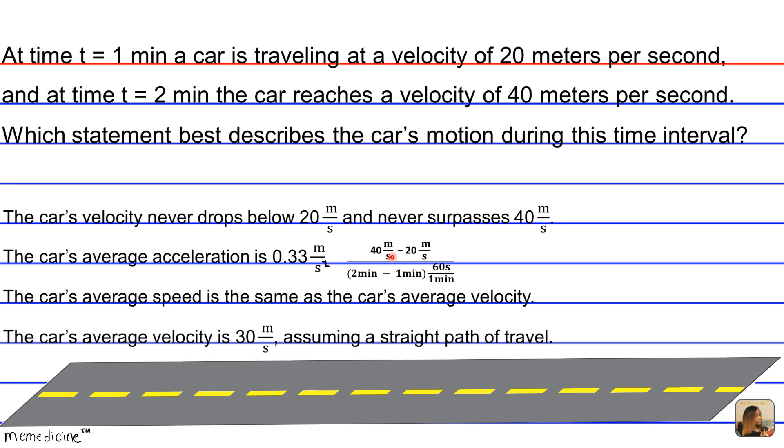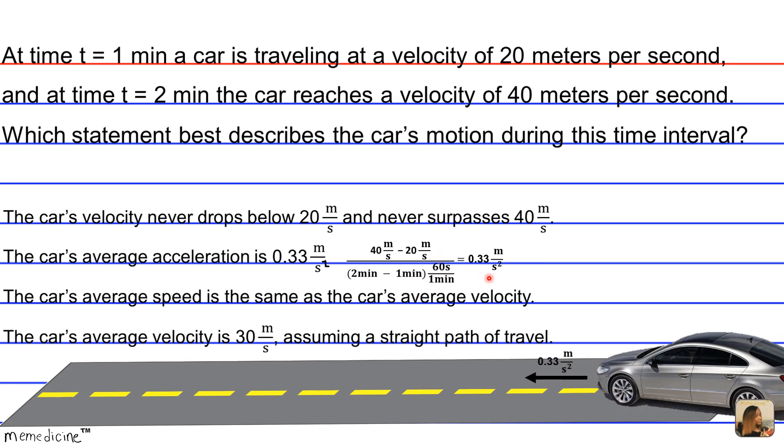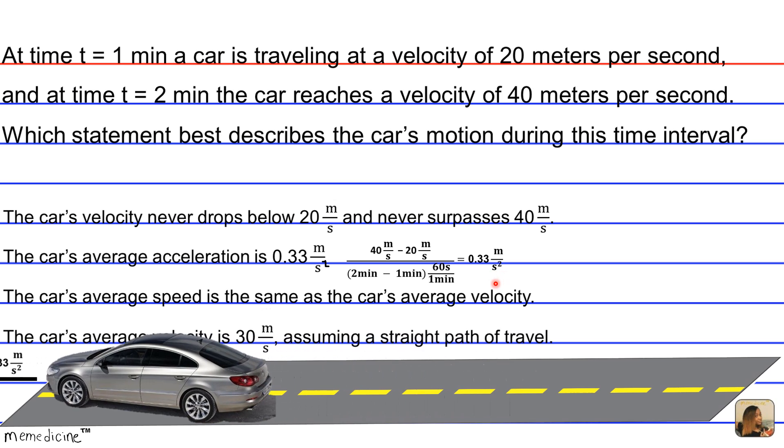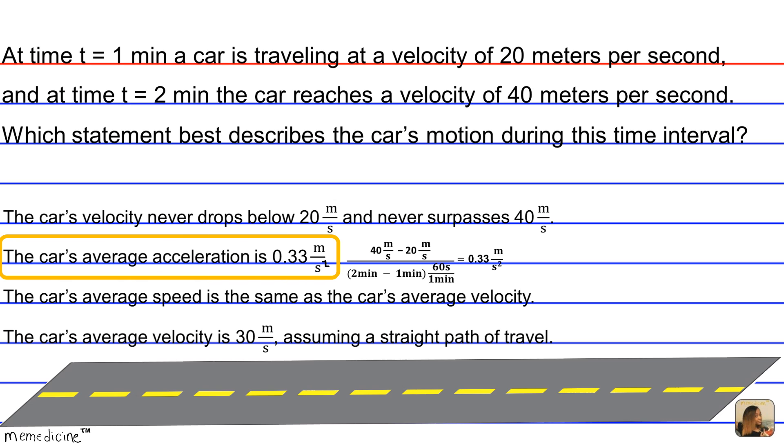So 20 meters per second divided by 60 seconds is going to be 0.33 meters per second squared, and so answer choice B is our final answer.